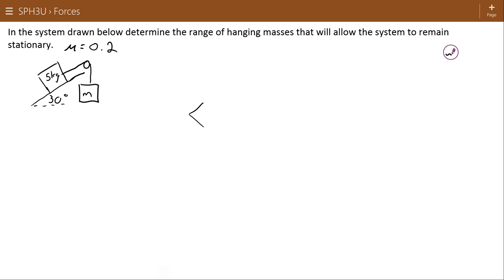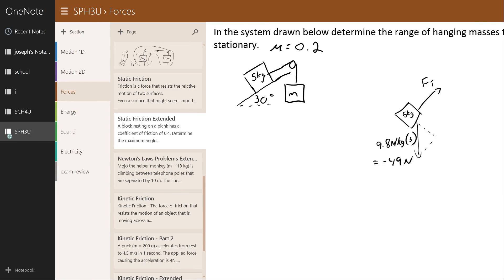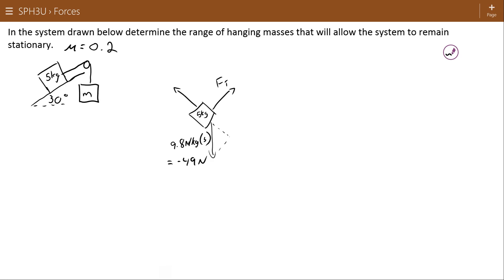So if we have that 5 kilogram object and consider all the forces acting on it, there's a force of gravity going down, and we can break that force of gravity into components. First of all, it's 9.8 newtons per kilogram times 5, which works out to negative 49 newtons. There's a force of tension pulling them up, a normal force from the incline, and a force of friction.